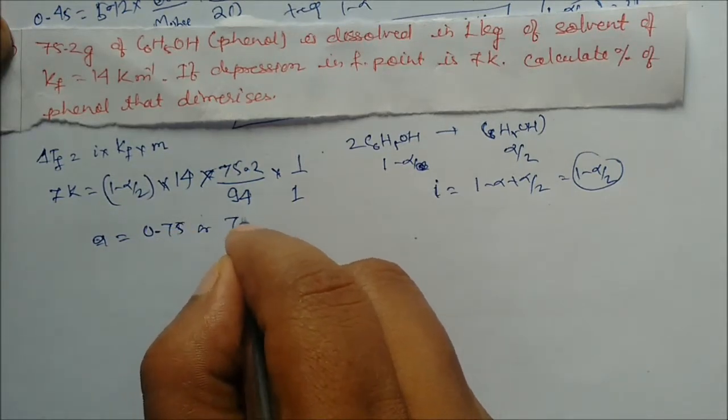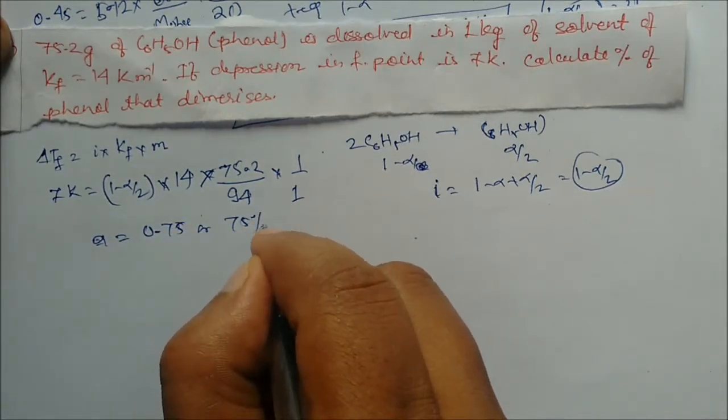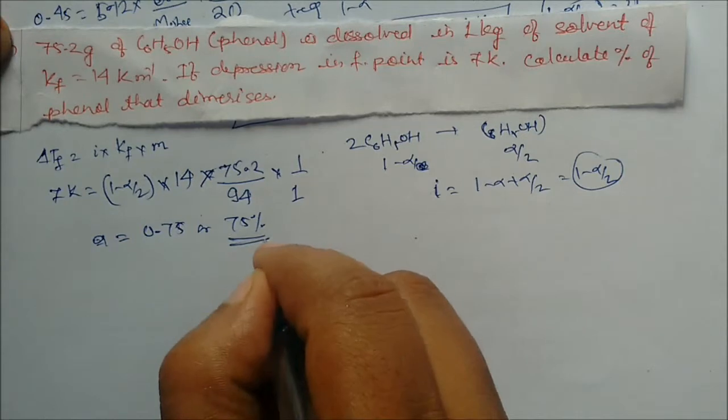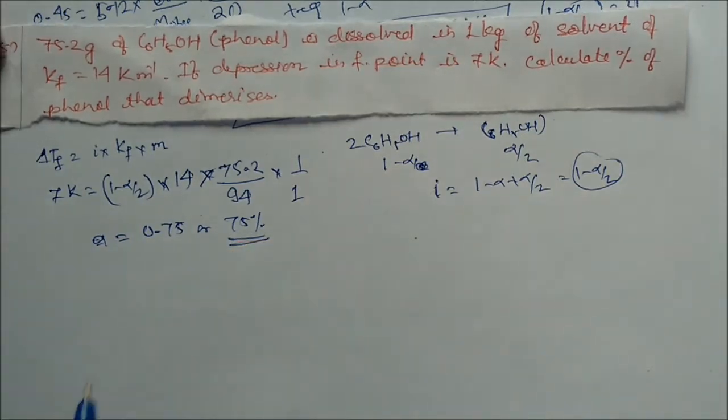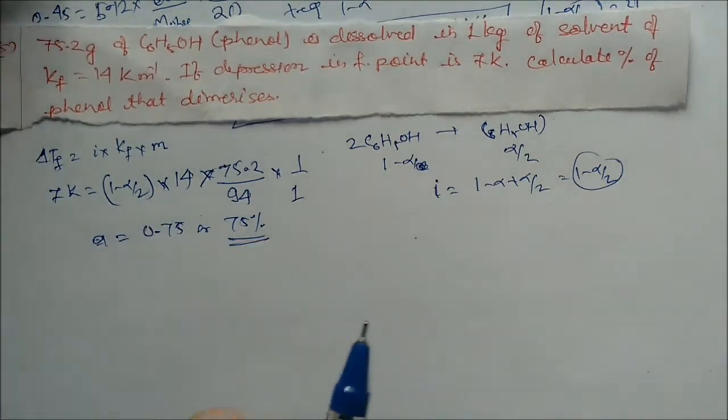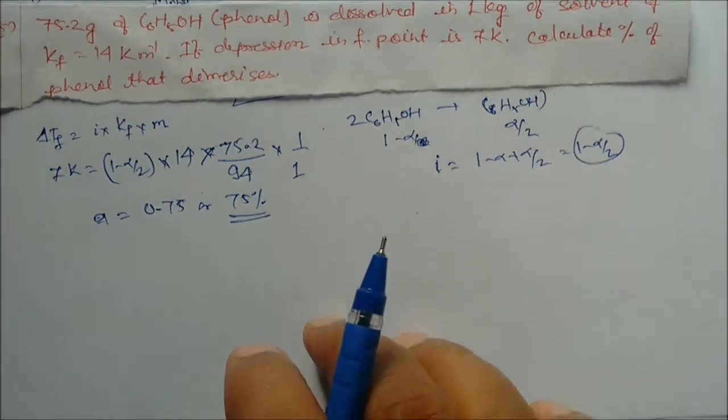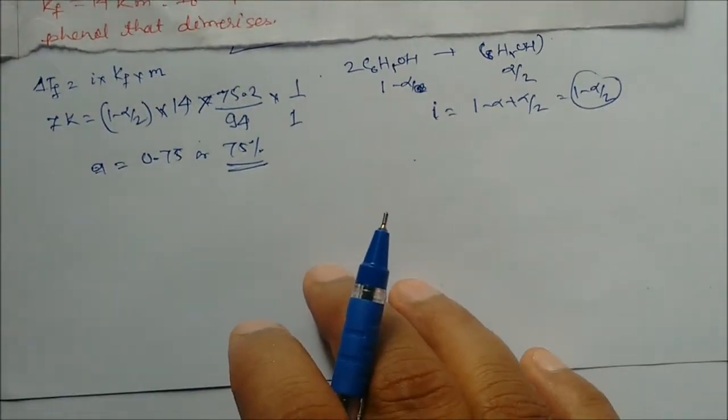Alpha = 0.75, or 75 percent of phenol has dimerized. This is the answer.